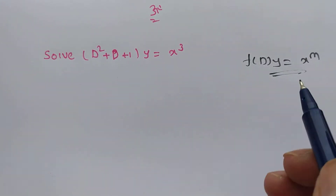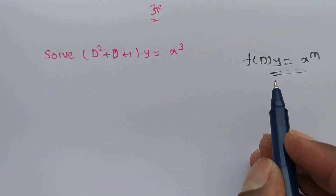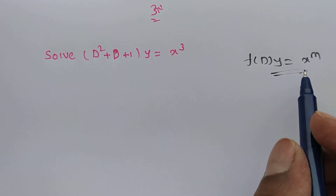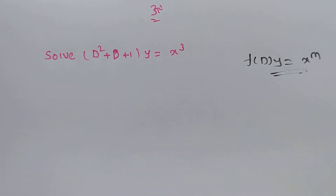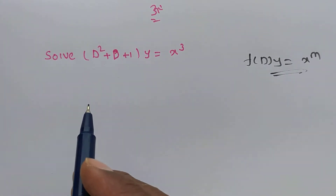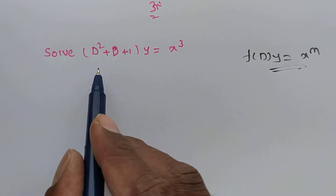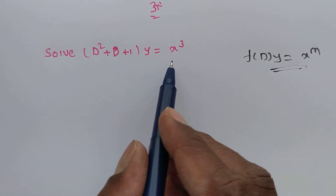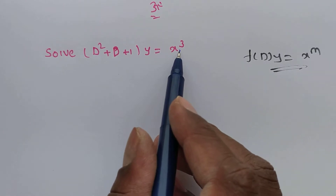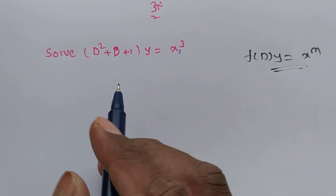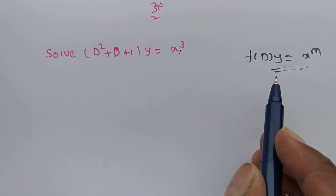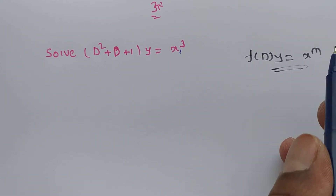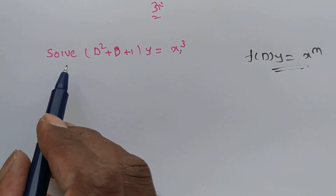Hi friends. In this video we are solving a problem on f(D)y = xⁿ form. The given problem is: solve (D² + D + 1)y = x³. This is in the form of f(D)·y = xᵐ.